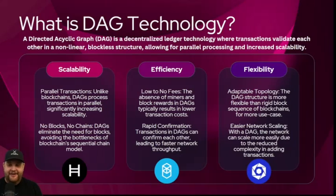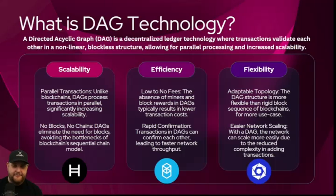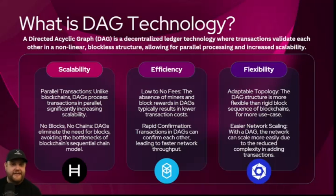There are three examples of DAGs here. First is Hedera, which uses the Hedera hashgraph — that's an example of a DAG. We also have Fantom, which X1 is forking code from, specifically the Lachesis mechanism. And then the third one is Constellation DAG — just another example of a DAG blockchain.